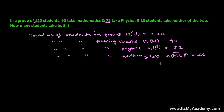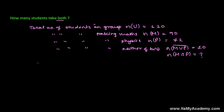Now we need to find out the number of students which are taking math as well as physics — both subjects. You can solve this problem with the help of a Venn diagram very easily, and without using a Venn diagram also. So here, let me try to solve this using the Venn diagram. Let's represent the given data.